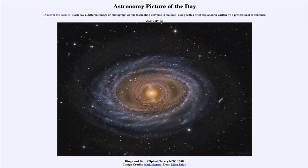That is apod.nasa.gov/apod. And today's picture for July 12th of 2023 is titled Rings and Bar of Spiral Galaxy NGC 1398. So what do we see here? Well, here we see the spiral galaxy known as NGC 1398, that's its catalog designation, and we can see some spiral arms swirling out from the center.